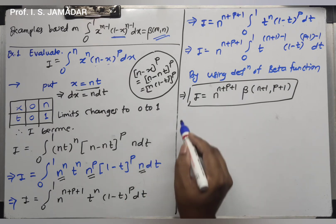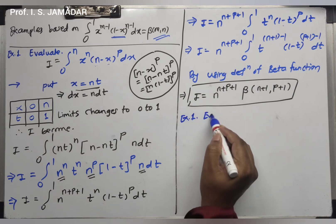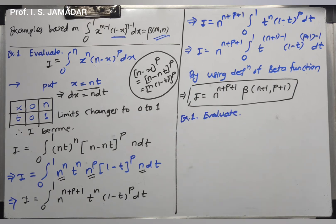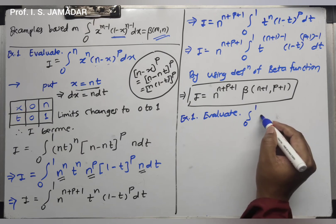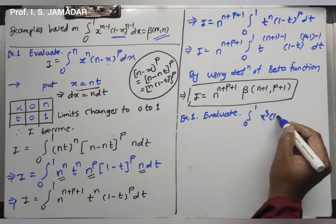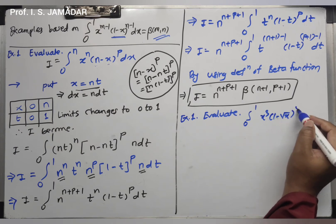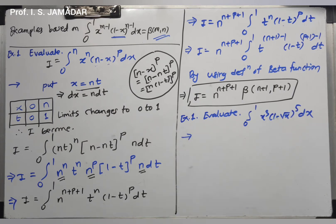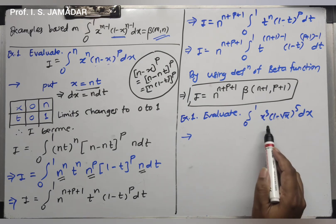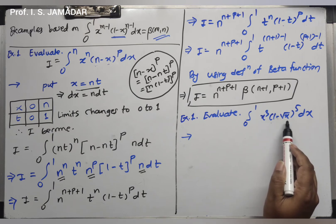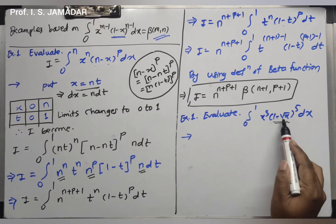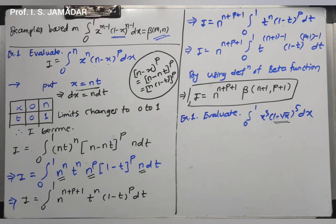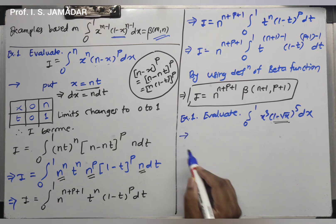Example number 2: Evaluate the integration from 0 to 1 of x³ times (1-√x)⁵ dx. Again the integral is not in proper beta function form — we have (1-√x) instead of (1-t). To convert this to the form (1-t), put √x equal to t.